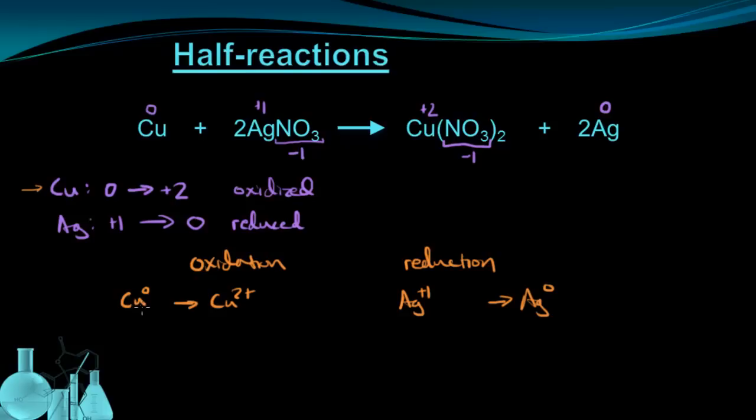For copper to go to plus 2, it had to lose two electrons. That means two electrons we write on the product side. For silver, it went from plus 1 to zero. Reduction means there's a gain in electrons, and that's a gain of one electron. These are our half reactions for our original equation—one for oxidation and one for reduction.